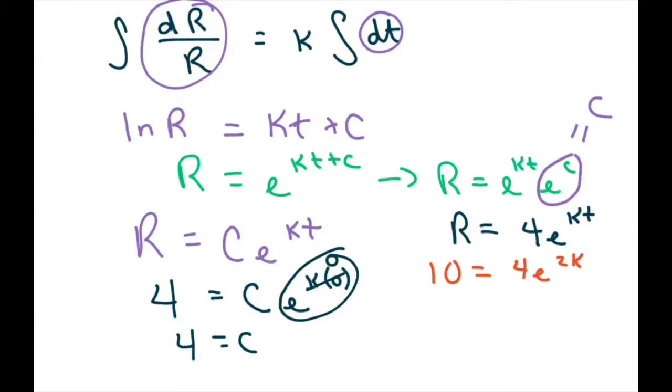Divide both sides by 4. So 10 over 4 reduces to 5 over 2. And that's going to equal e to the 2k. Now to solve for k, we have 5 over 2 equals e to the 2k. And you just take the ln of 5 over 2 equals 2k. So ln of 5 over 2 divided by 2 equals k. Or just multiply through by 1 half.